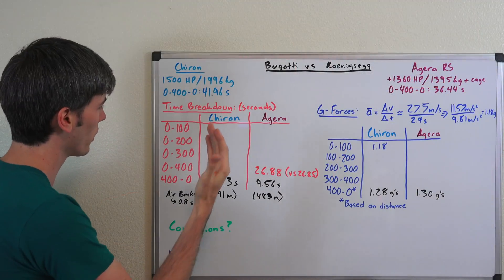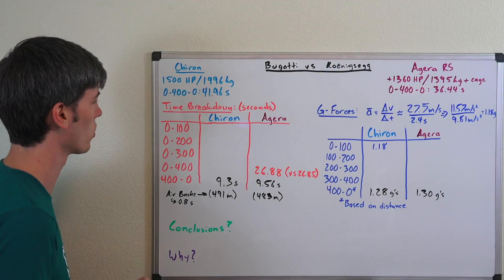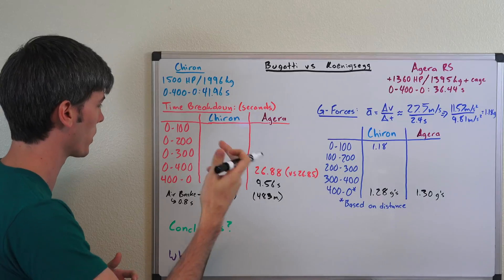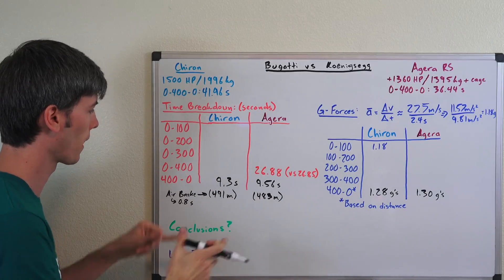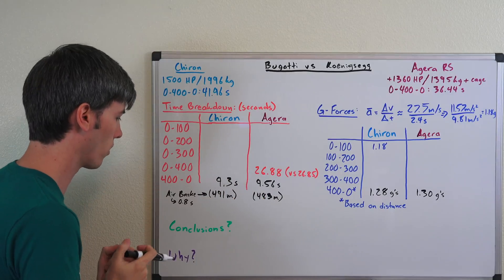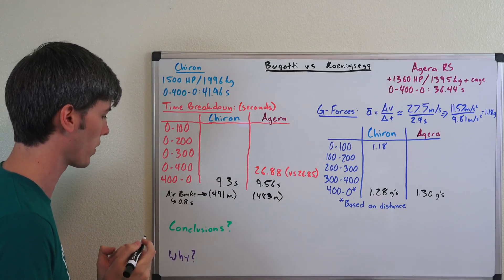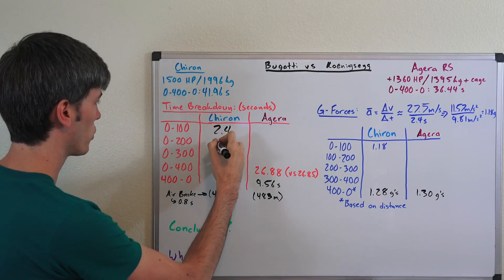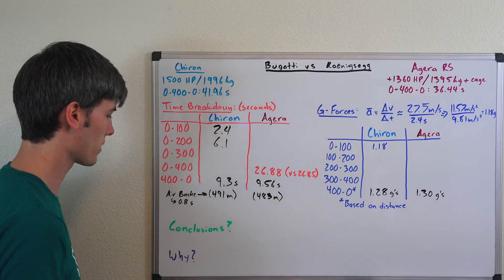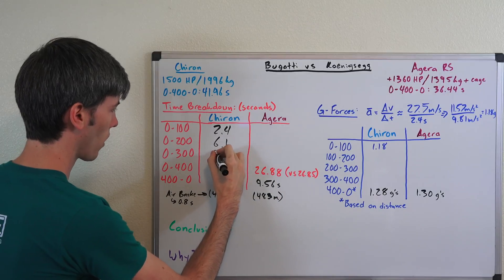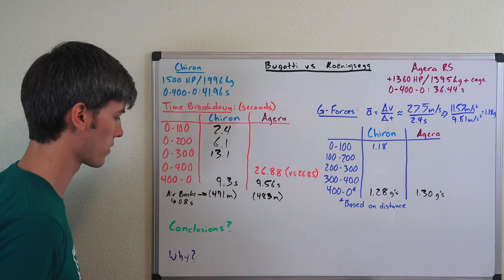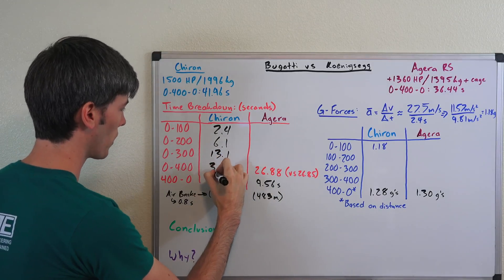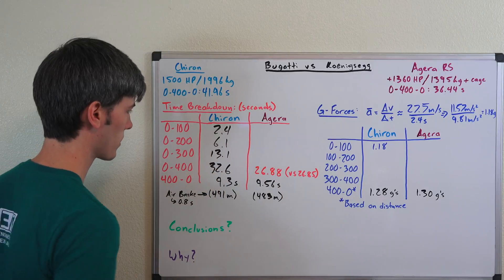The first thing we're going to do is analyze the time it took for each of these vehicles to get to 100 kilometers per hour, 200, 300 and 400 kilometers per hour. I've got the braking times there already. The Bugatti Chiron was able to hit 100 kilometers per hour in just 2.4 seconds, 200 in 6.1 seconds, 300 in 13.1 seconds and 400 in 32.6 seconds.